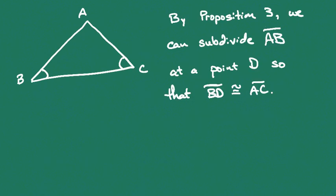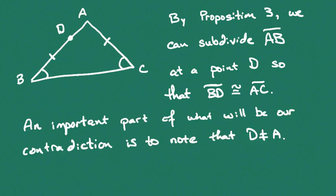By Proposition 3, we showed that because AB is longer, we can subdivide segment AB at a point D so that segment BD is congruent to segment AC. An important part of what's going to be our contradiction is to note that because BD is the same length as our shorter line segment, it's impossible for D to get all the way up to point A. So D cannot equal point A — they couldn't coincide.